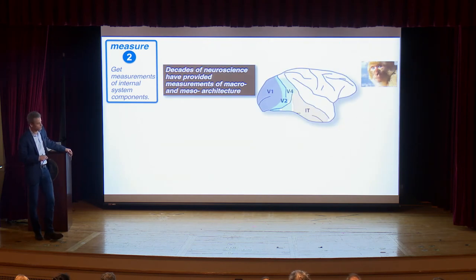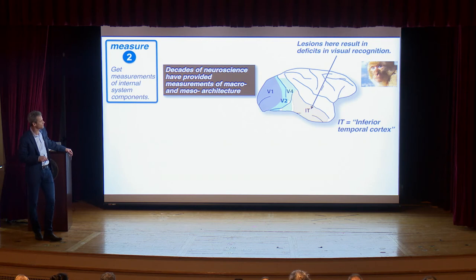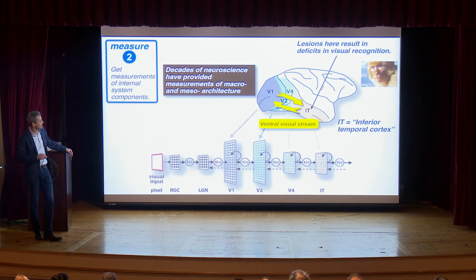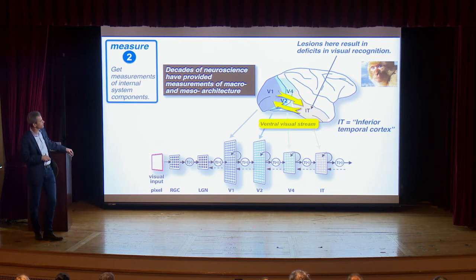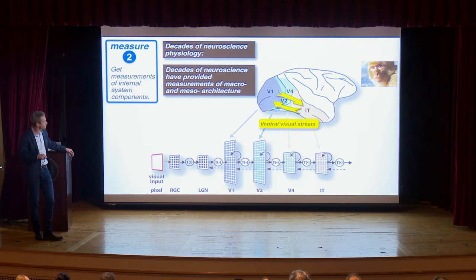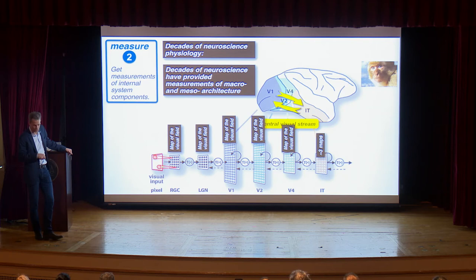Decades of neuroscience have already provided lots of constraints. We know about the ventral visual processing stream — lesions in inferotemporal cortex produce recognition deficits in non-human primates. We lay this out as a series of conceptual layers with millions of neurons in each area, with feedforward, feedback, and recurrent anatomy. We also know a lot about the physiology: retinotopic maps from the retina continuing along the stream, local processing tiled across the visual field.